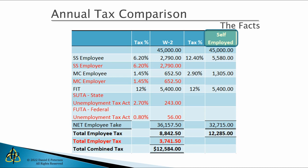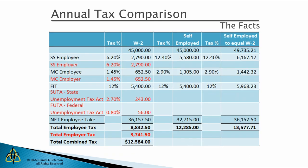In addition, you have federal income tax on top of it. The real cash drain for the self-employed is having to pay both sides of that employer tax. If as a self-employed individual you want to make the same net pay as a W-2 employee, instead of a $45,000 gross paycheck you need a $49,735 gross paycheck. That's because 12.4% goes to Social Security and 2.9% goes to Medicare — in order to net the same $36,157, you have to gross $49,735 because the cash comes out of your pocket to pay both sides.